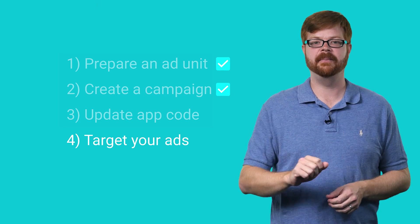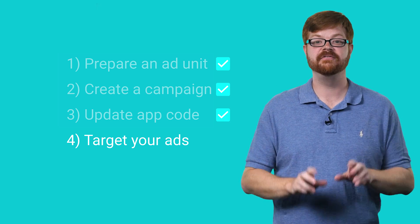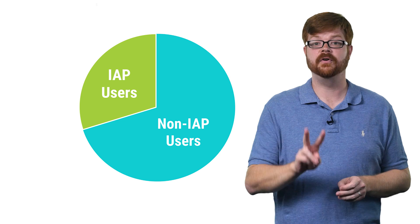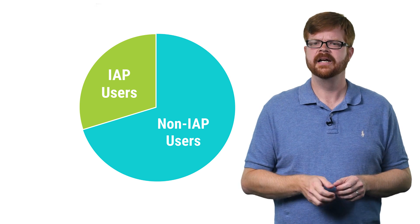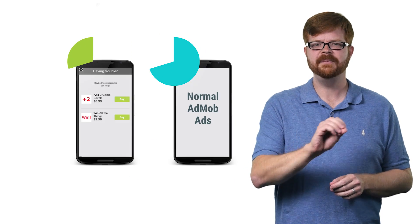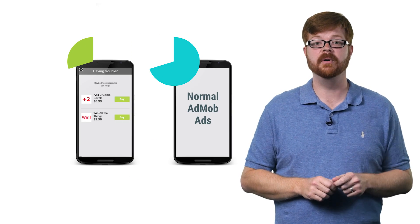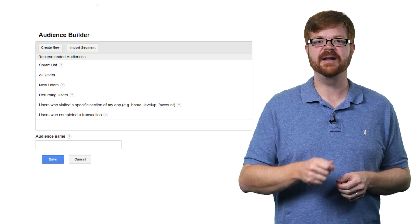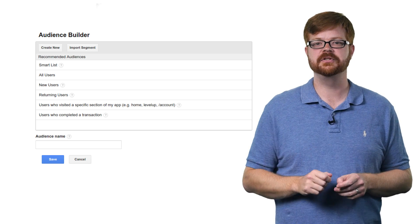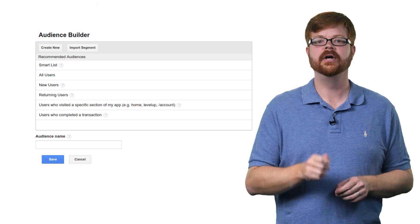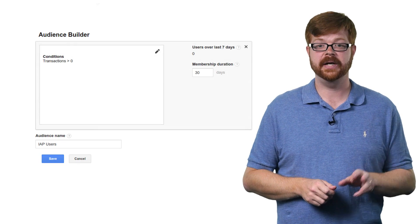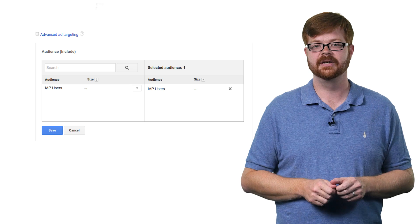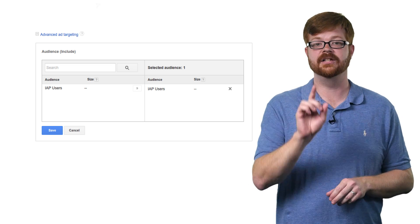Now that we've covered ad units, creating the campaign, and updating your app's code, there's just one step left — targeting your house ads to maximize revenue. Publishers with in-app products often find users fall into two categories: those who regularly buy products, and those that don't. Using AdMob's Audience Builder, you can create an audience of people who have already purchased in-app products — look for the category 'users who completed a transaction.' You can then target your house ads to that audience, and AdMob will serve its normal ads to the rest of your users, giving you the best possible chance of connecting each user with a relevant ad.